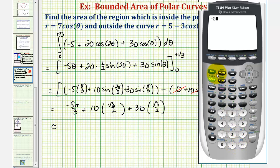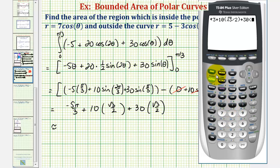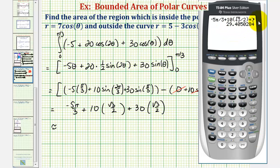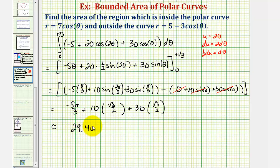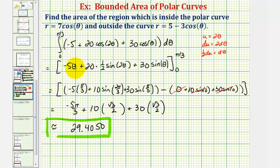Now let's go to the calculator and get our decimal approximation. We have negative five pi divided by three, plus ten times square root three divided by two, plus thirty times square root three divided by two. The approximate value is twenty-nine point four zero five zero, which would be the approximate area of the bounded region shaded here in blue.